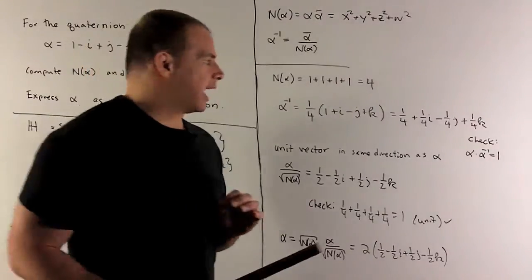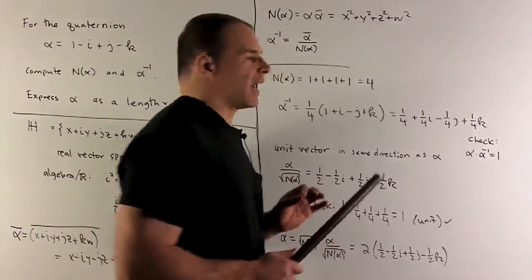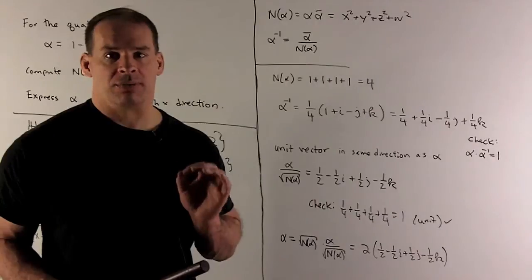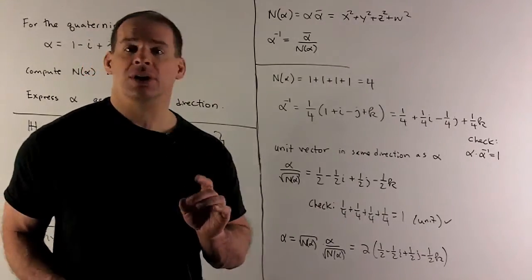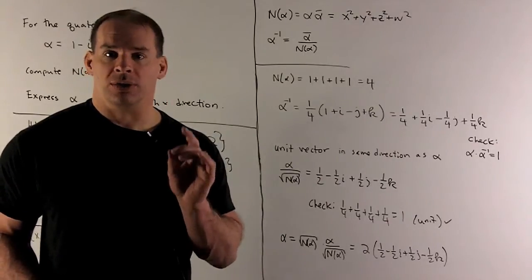So for our inverse, we get 1 fourth plus 1 fourth i, minus 1 fourth j, plus 1 fourth k. For our check, we multiply alpha times alpha inverse, we better get a 1. So we're going to do that on the next board.